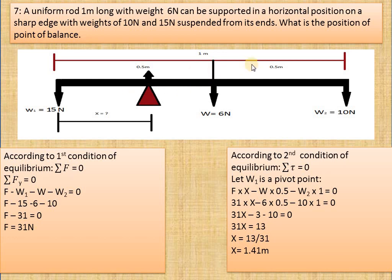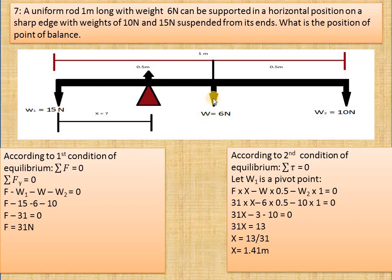That's why we have no rotation generated. Now let's say W1 is the axis of rotation, or pivot point, around which rotation is generated. So let's say W1 is the pivot point. We have three torques generated. For each torque we need to consider the force and its moment arm distance from the pivot.